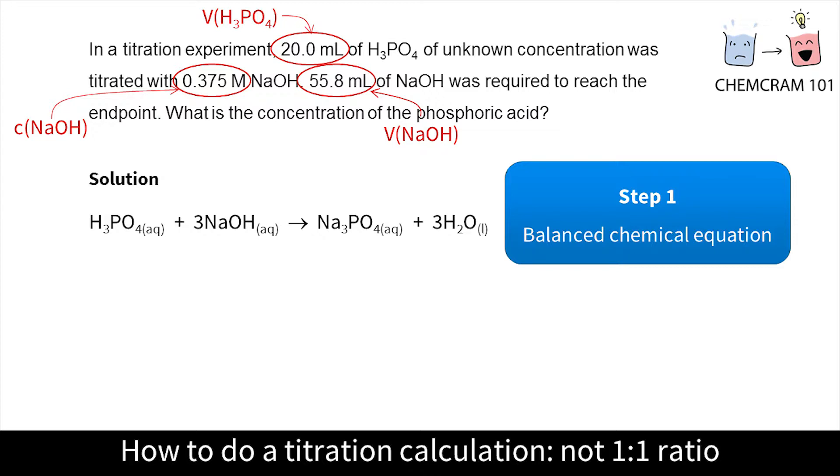This time the equation isn't balanced so we need three in front of sodium hydroxide and three in front of water to balance it. A quick way of checking is to look at the ratio of protons and proton acceptors. Phosphoric acid has three protons because it's triprotic while sodium hydroxide has one proton acceptor so we need three hydroxides to match the protons.